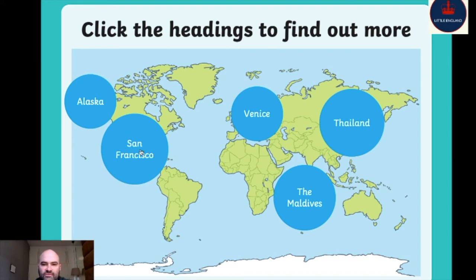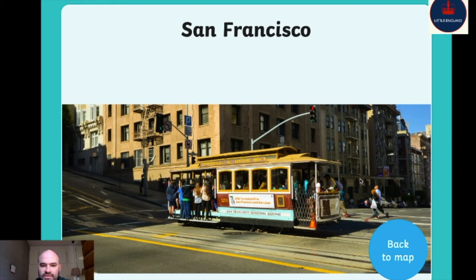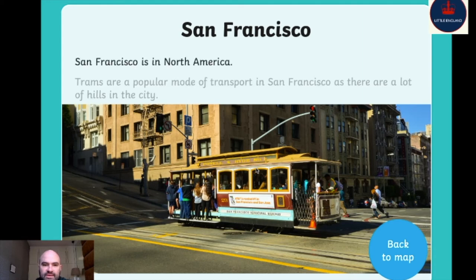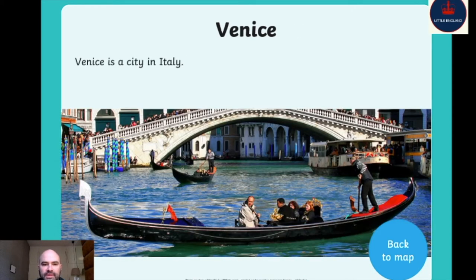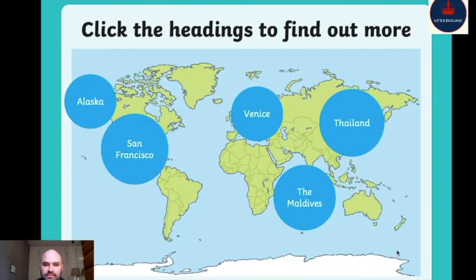Now let's look at San Francisco and California in the USA. They have trolleys or trams. San Francisco is in North America, in California. Trams are a popular mode of transport in San Francisco because there are a lot of hills in the city. They have trams going up and down these rails — like in Prague, but the trams look a bit different.